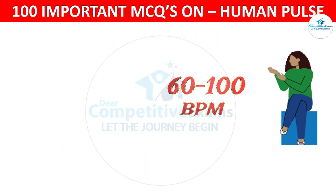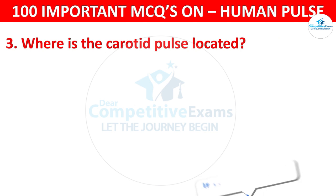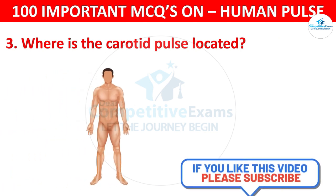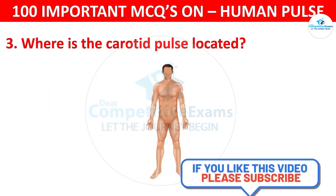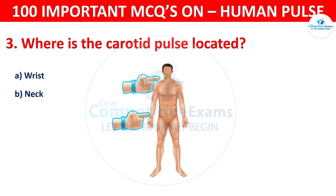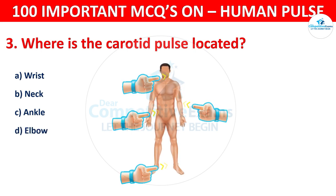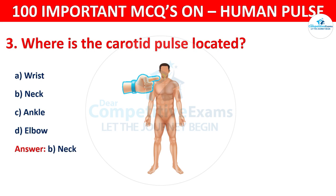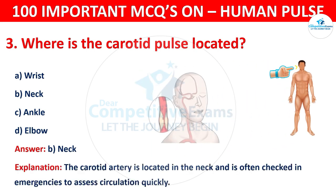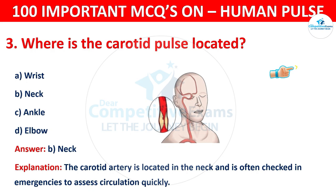Question number 3: Where is the carotid pulse located? Your options are: Wrist, Neck, Ankle, or Elbow. The correct answer is B, that is neck. The carotid artery is located in the neck and it is often checked in emergencies to assess circulation quickly.